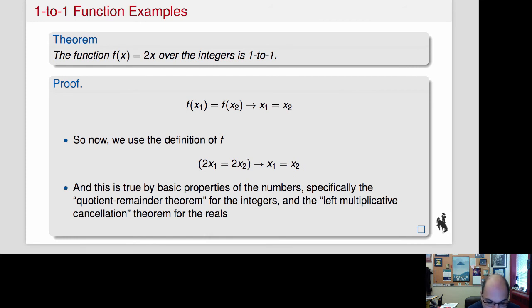Well, we're going to have to use the definition of f, right? So what we'll say is f of x1, that's just 2x1, f of x2 is 2x2. So 2x1 equals 2x2 implies that x1 equals x2, and this is actually true. If we're talking about the integers, then we need something called the quotient remainder theorem, which keeps coming up. It's an important theorem.